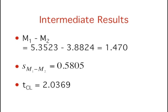We now have all the components needed to compute the confidence interval. First, we know the difference between means. M1 minus M2 equals 5.3523 minus 3.8824, which equals 1.470. We know the standard error of the difference between means is 0.5805, and that the T for the 95% confidence interval with 32 degrees of freedom is 2.0369.